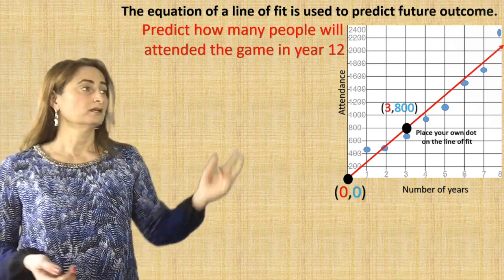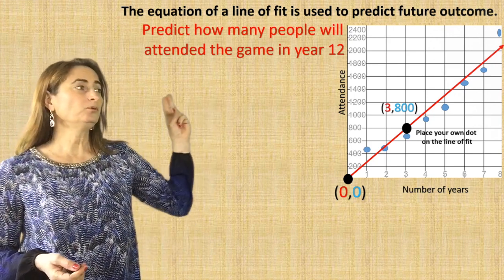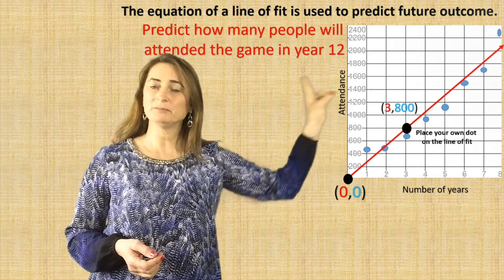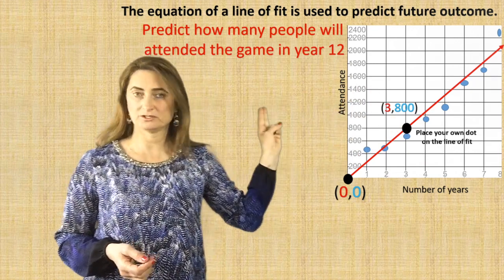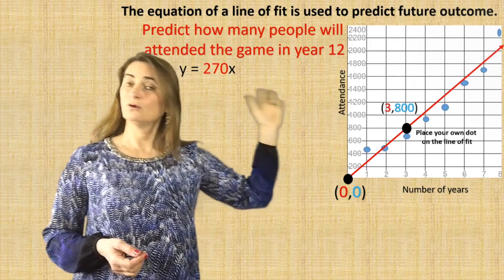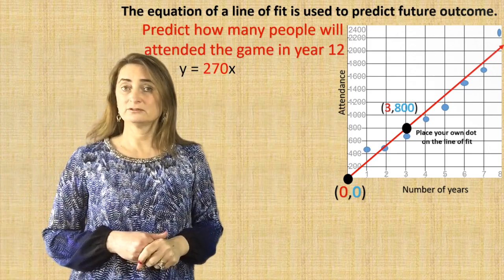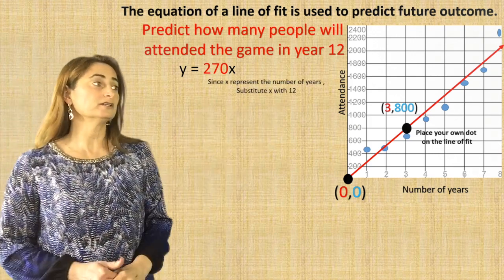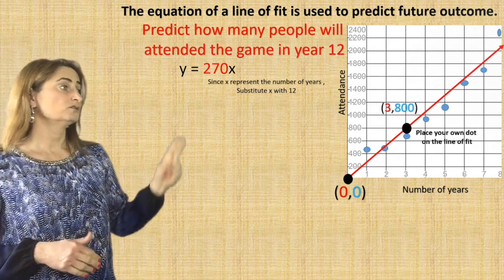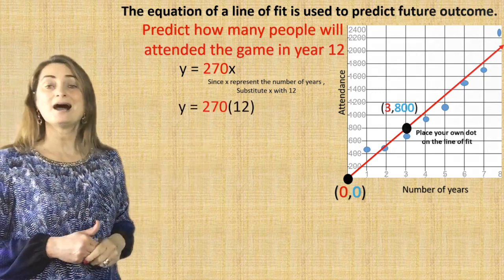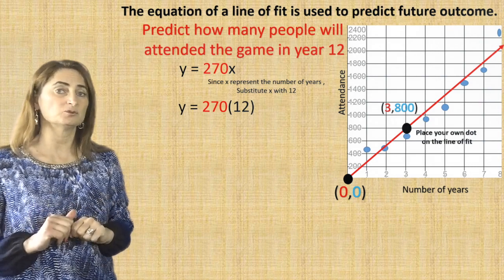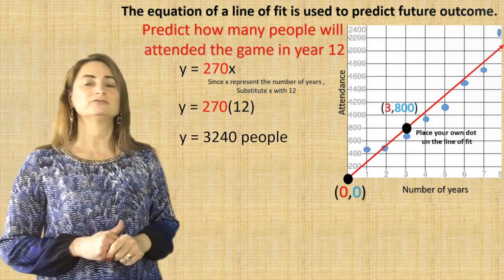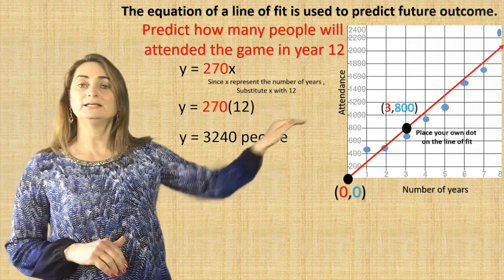The equation of the line of fit is used to predict future outcomes. Predict how many people will attend the game in year 12. Since x represents the number of years, substitute x with 12: y equals 270 times 12. Simplifying gives y equals 3,240 people. That's how many people will be attending in year 12.